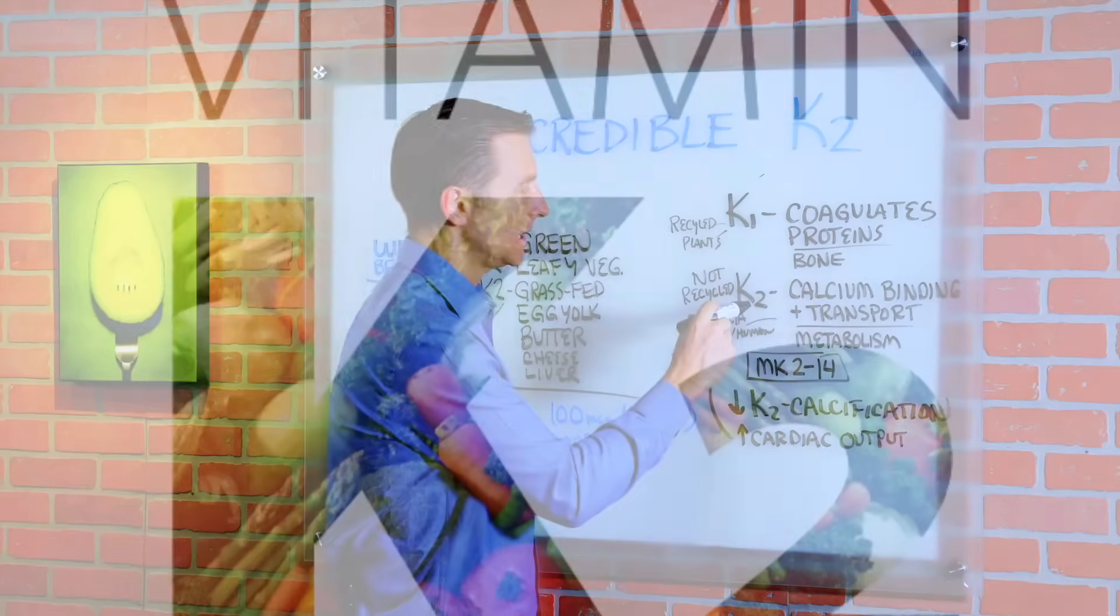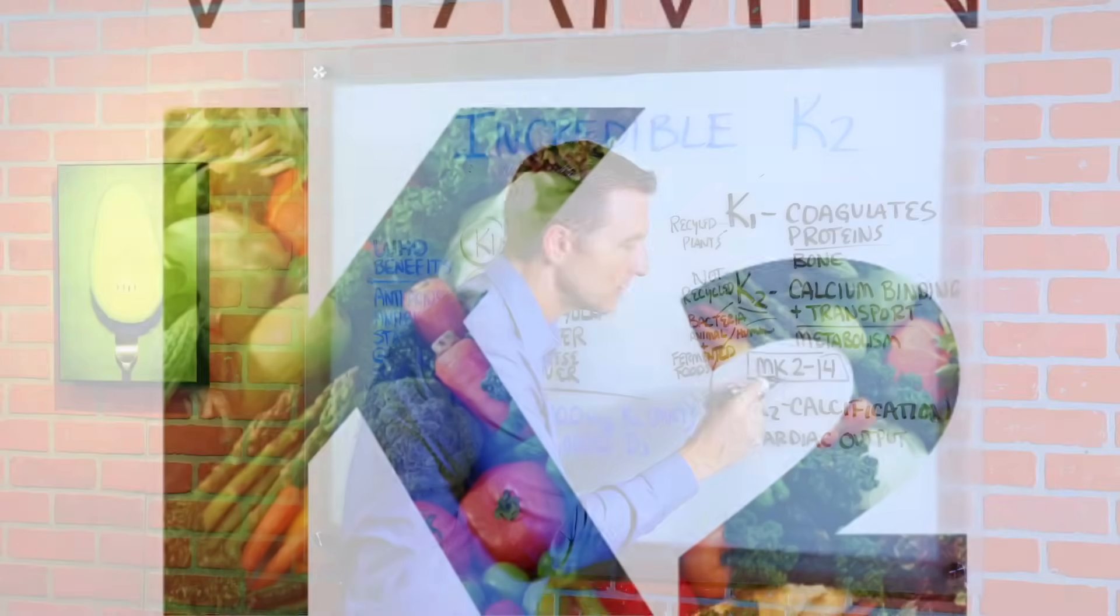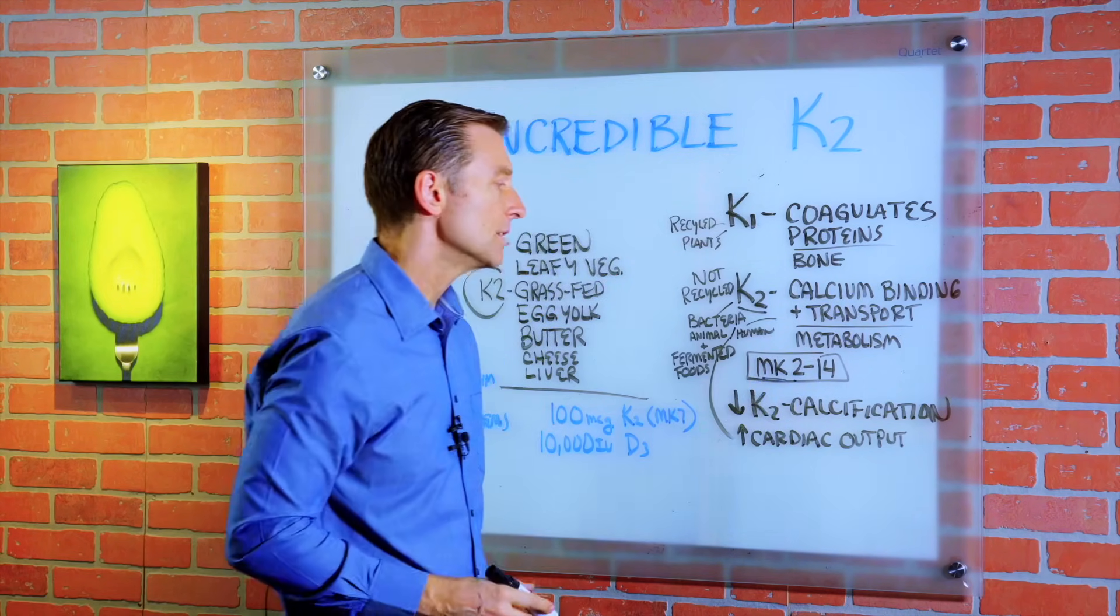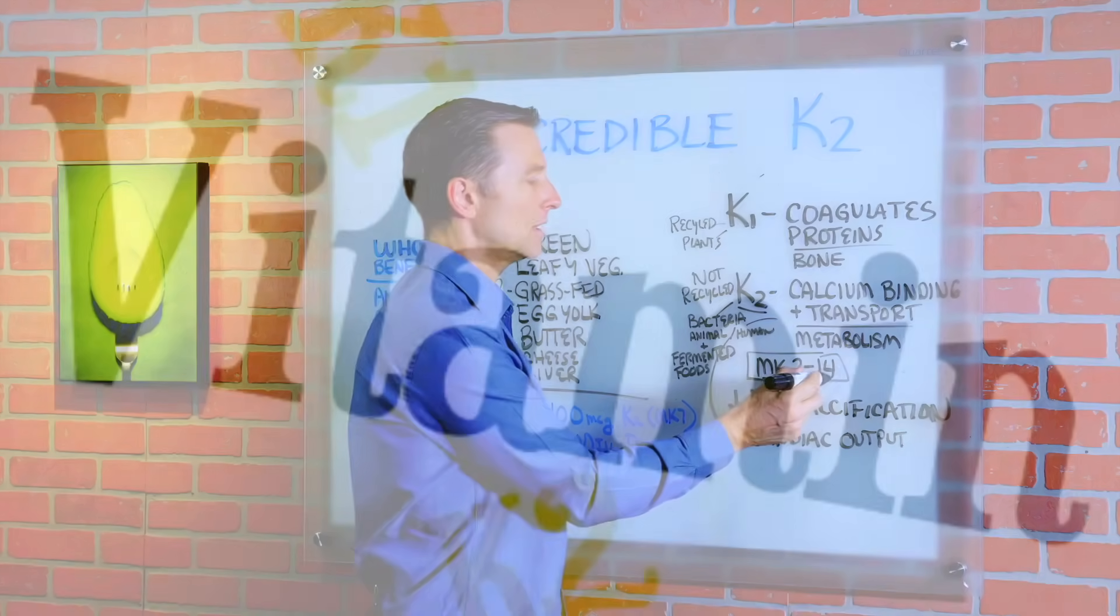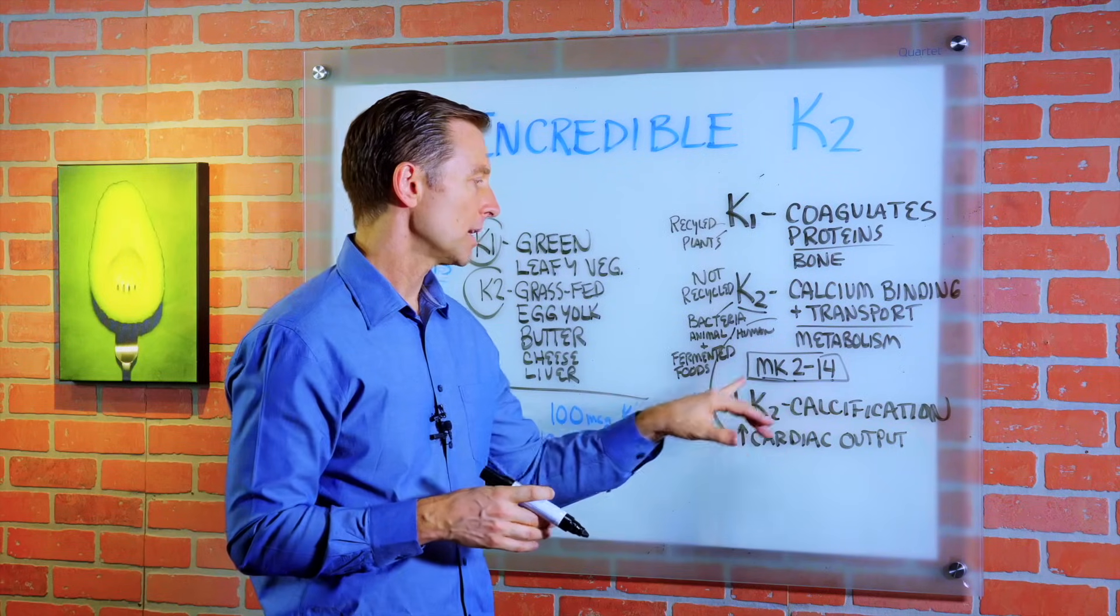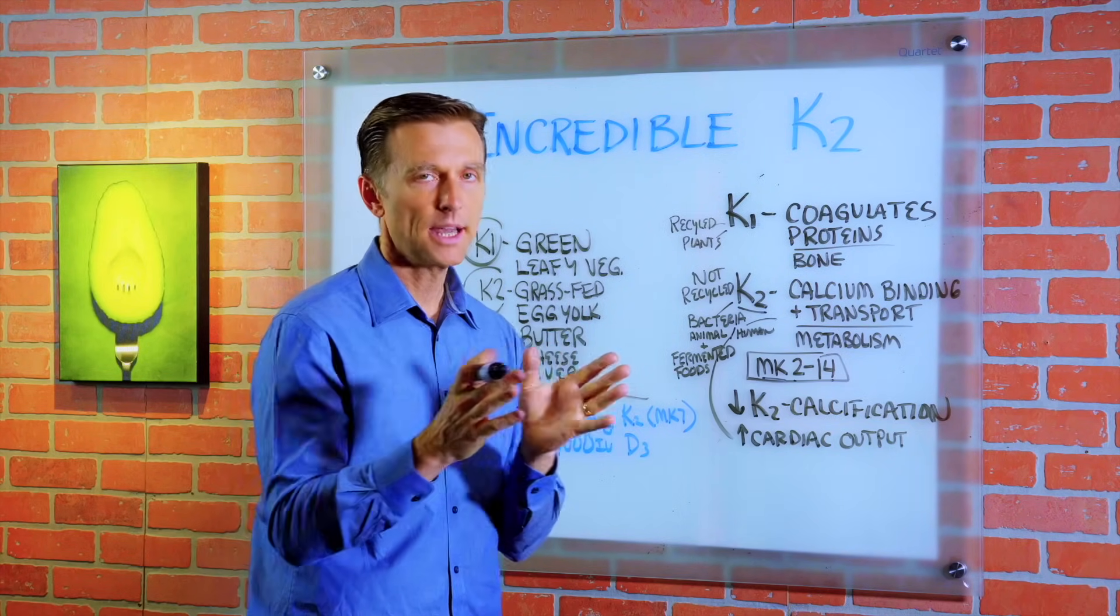There's several different types of vitamin K2, MK versions. You have MK2, 3, 4, 5, 6, 7, 8, 9, 10, 11, 12, 13, 14. So you have a lot of different versions of K2. But the ones you can get in supplement form are MK4 and MK7.